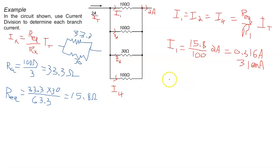Here this is rounding to three significant digits. That tells us that I1 equals I2 equals I4, and all of those are 316 milliamps.